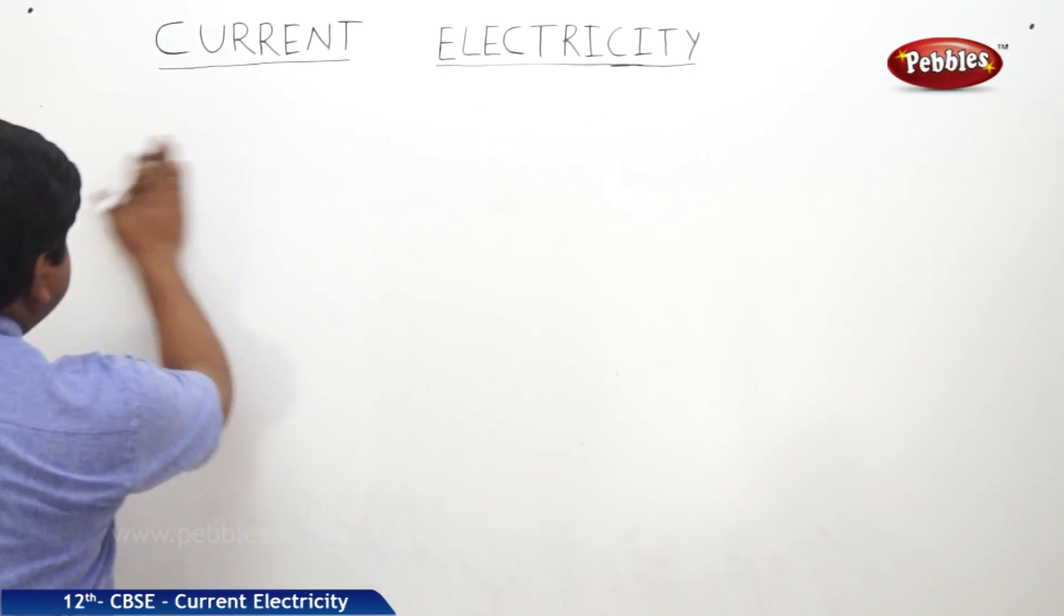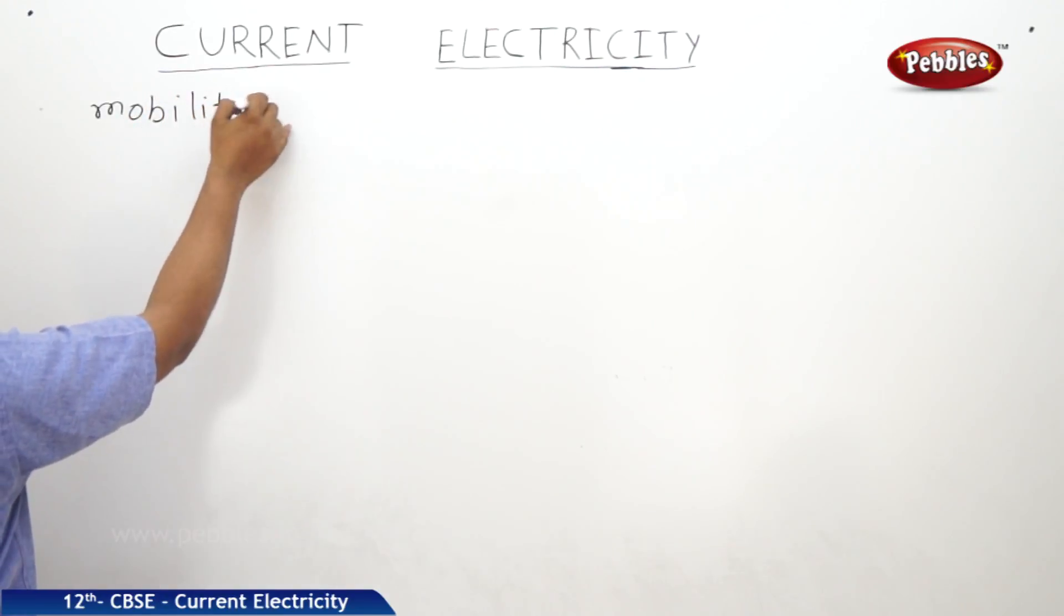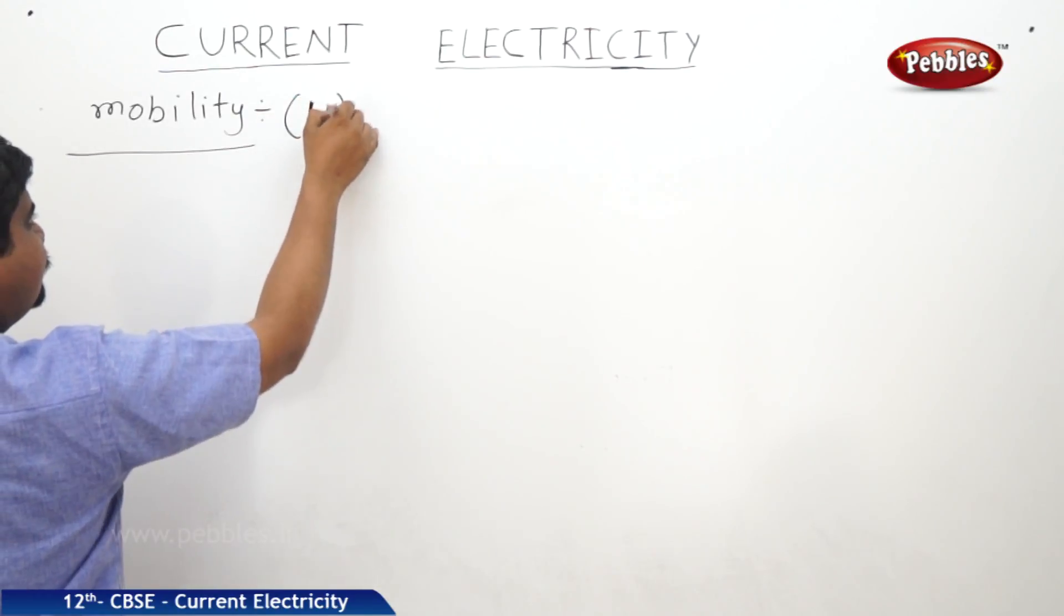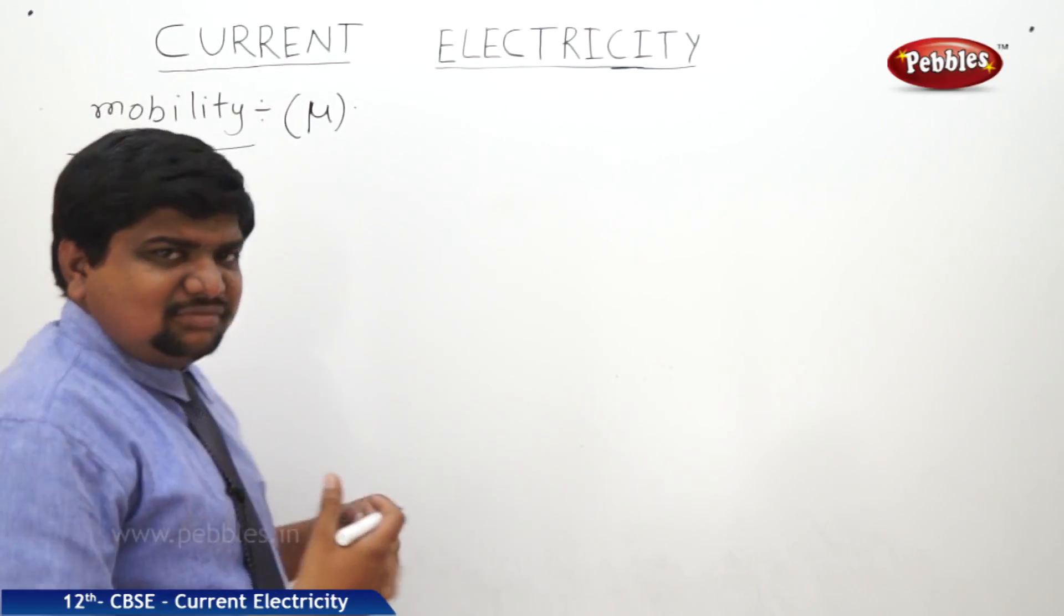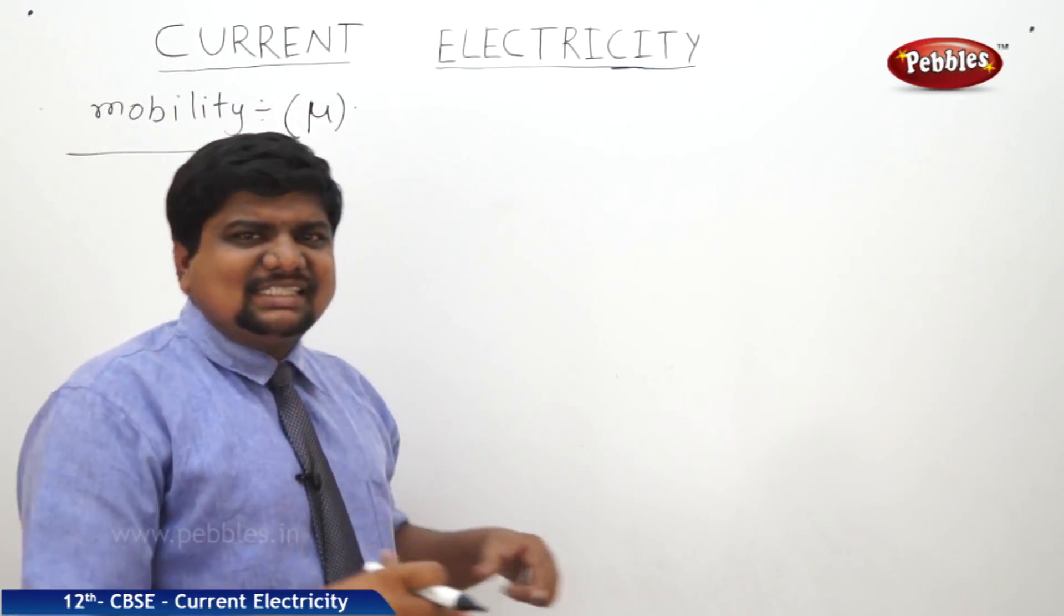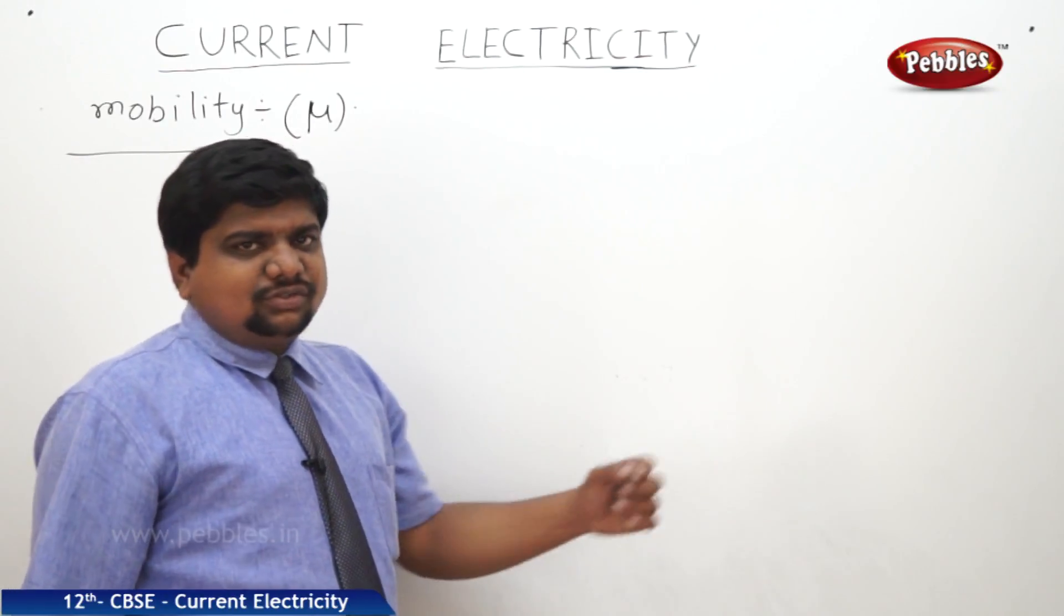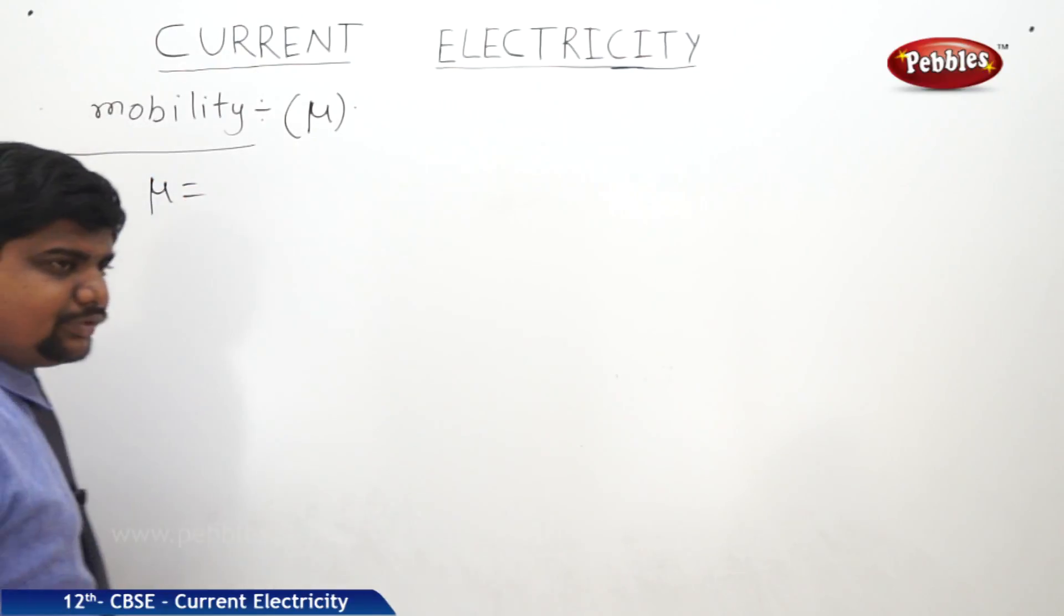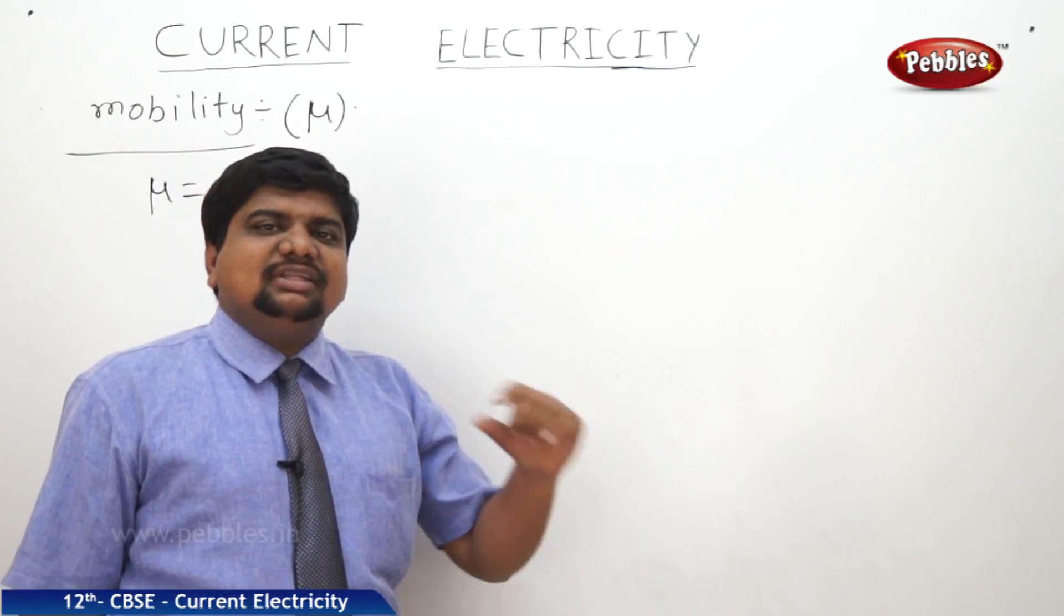Now, the next concept is mobility. The symbol of the mobility is mu. What is the meaning of mobility? Mobility in terms, it seems to be the velocity or how much velocity will require for the unit application of the electric field. So, mu is defined as, in previously we have discussed about the drift speed, nothing but the drift velocity.